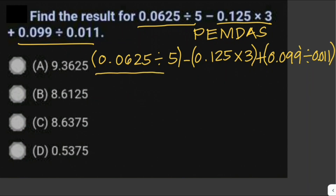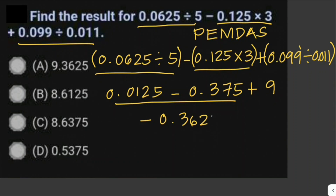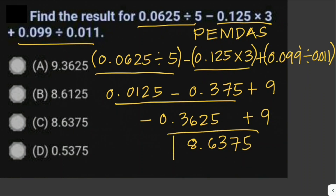Starting with 0.0625 divided by 5, which equals 0.0125. Then minus 0.125 times 3, which equals 0.375. Plus 0.099 divided by 0.011, which equals 9. Now performing addition and subtraction from left to right: 0.0125 minus 0.375 equals negative 0.3625, plus 9 equals 8.6375. So the answer is letter C.